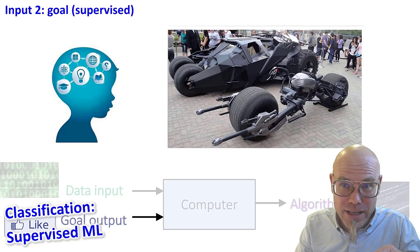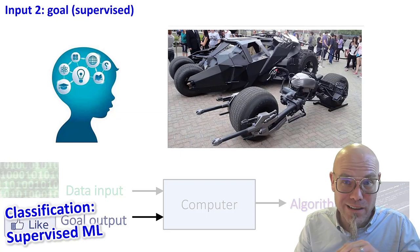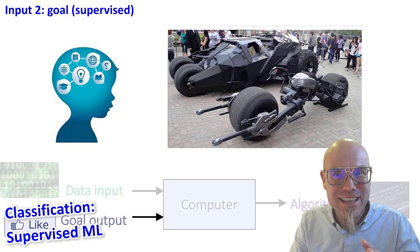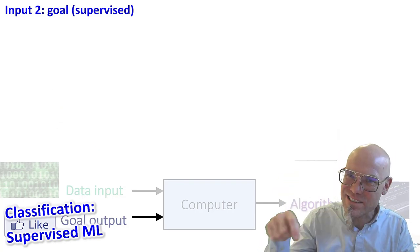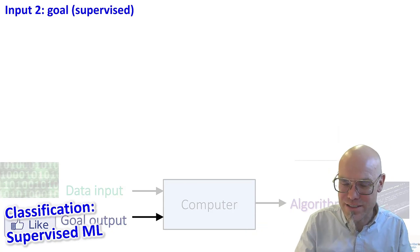And then this one here, well, that's a Batmobile. But you get the drift, right? So we supervise, we train the machine. And then you learn the machine to sort things into boxes. Basically, that's it. That's supervised learning.